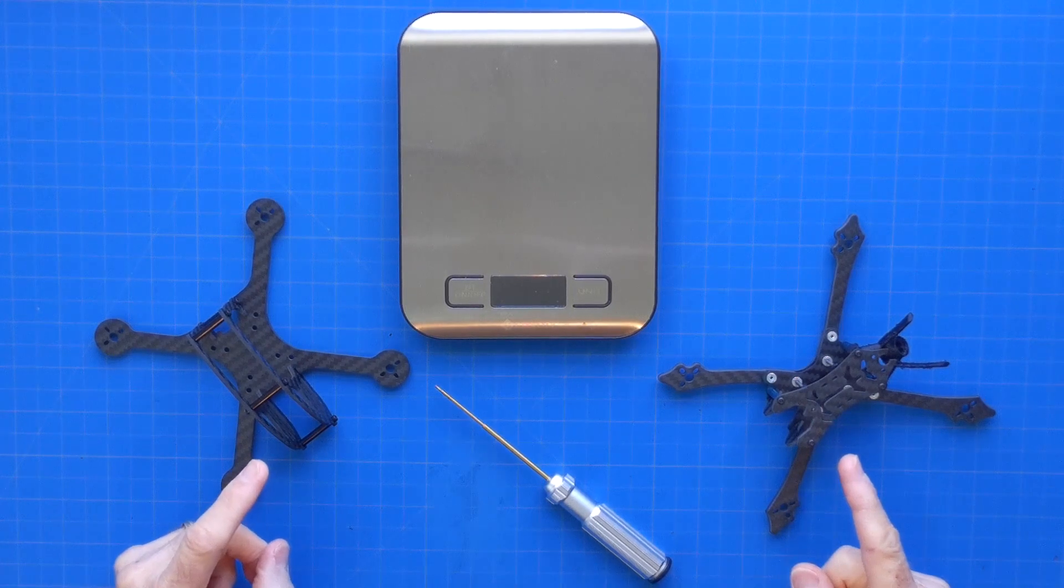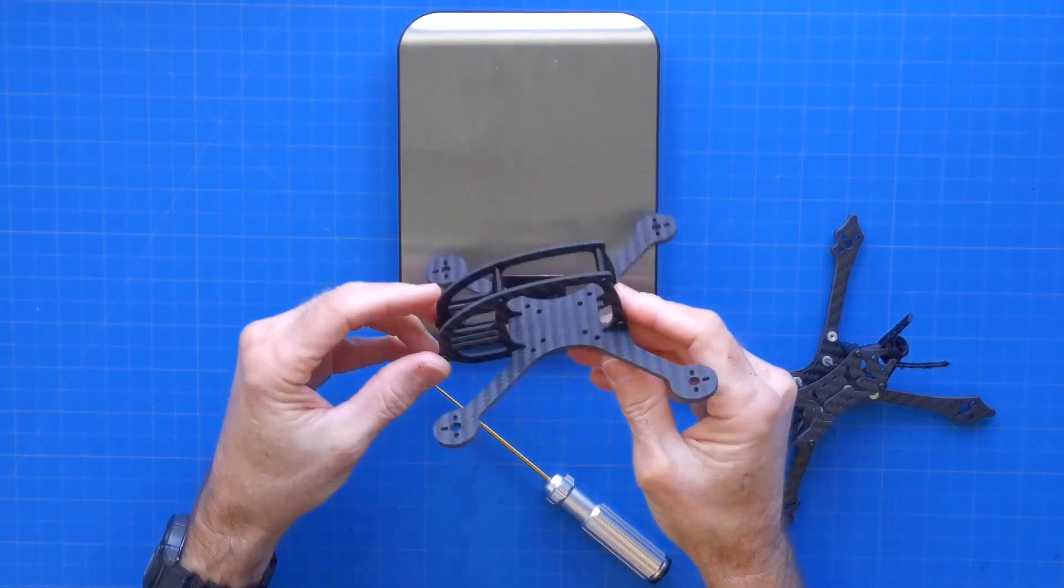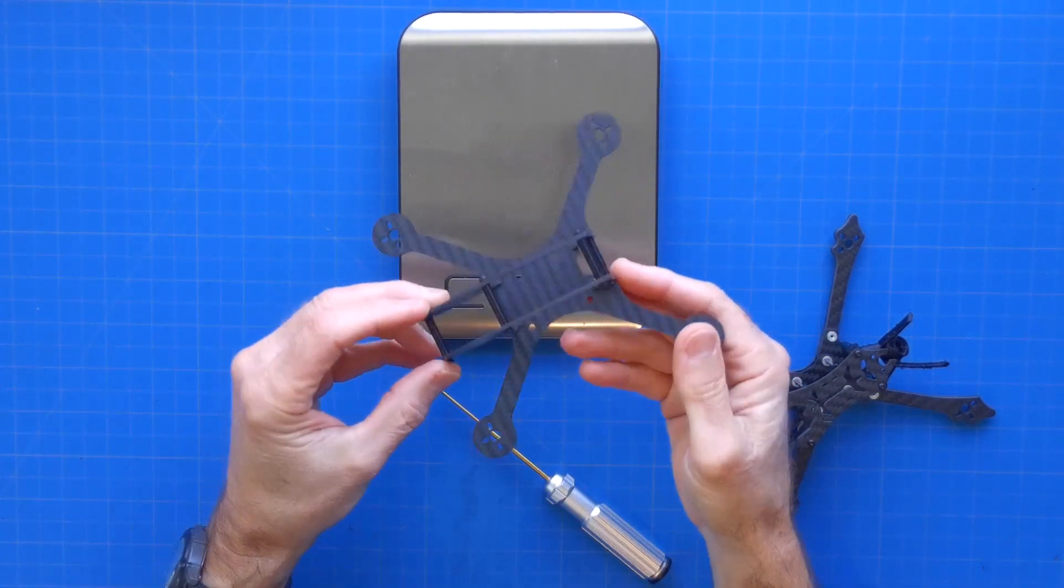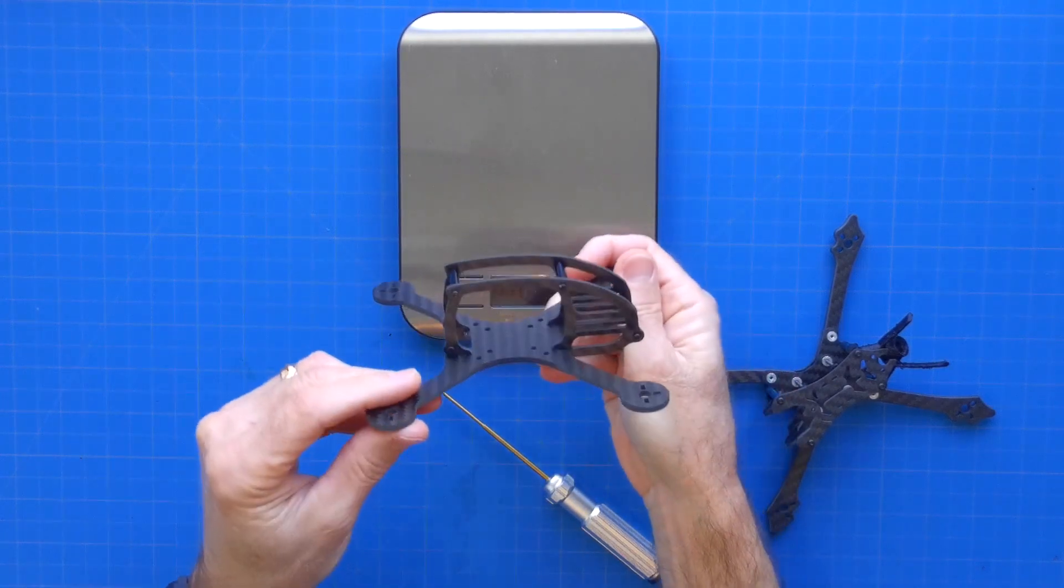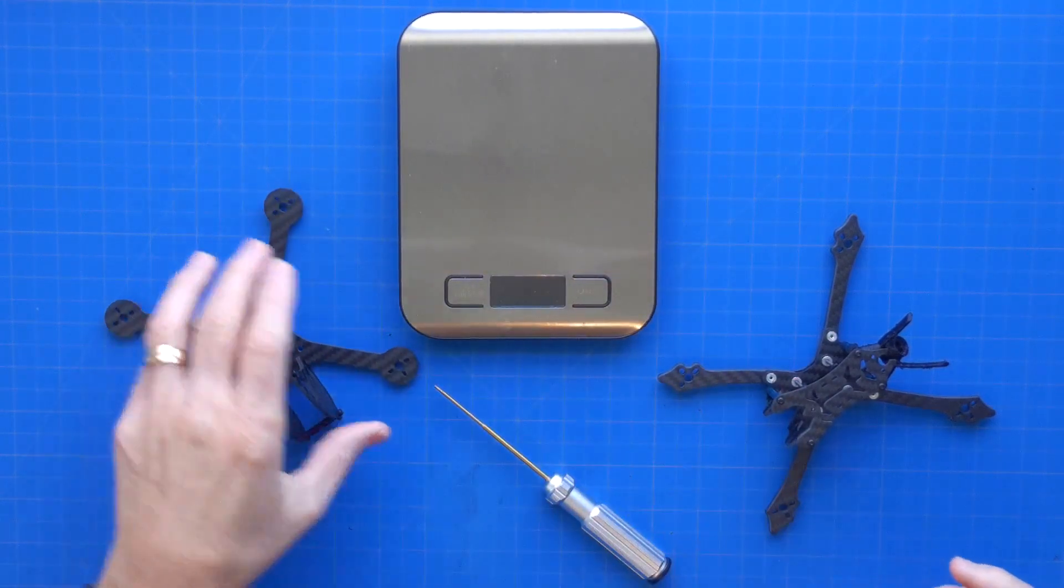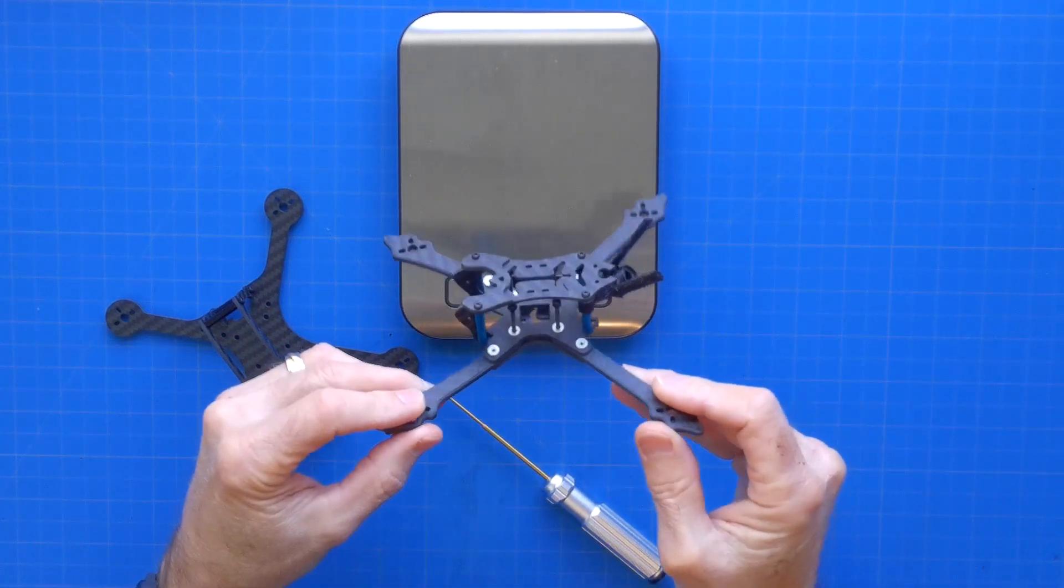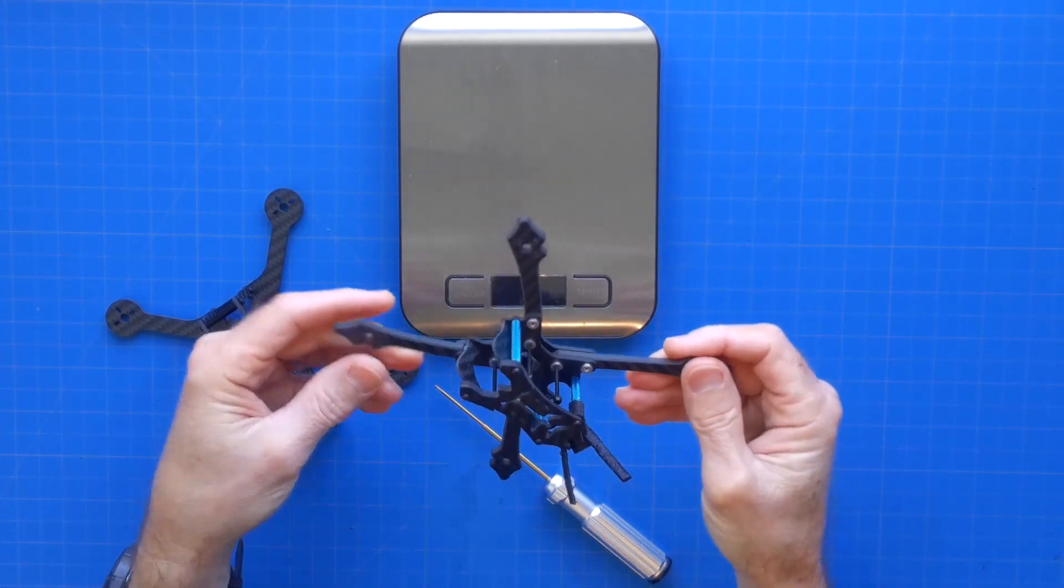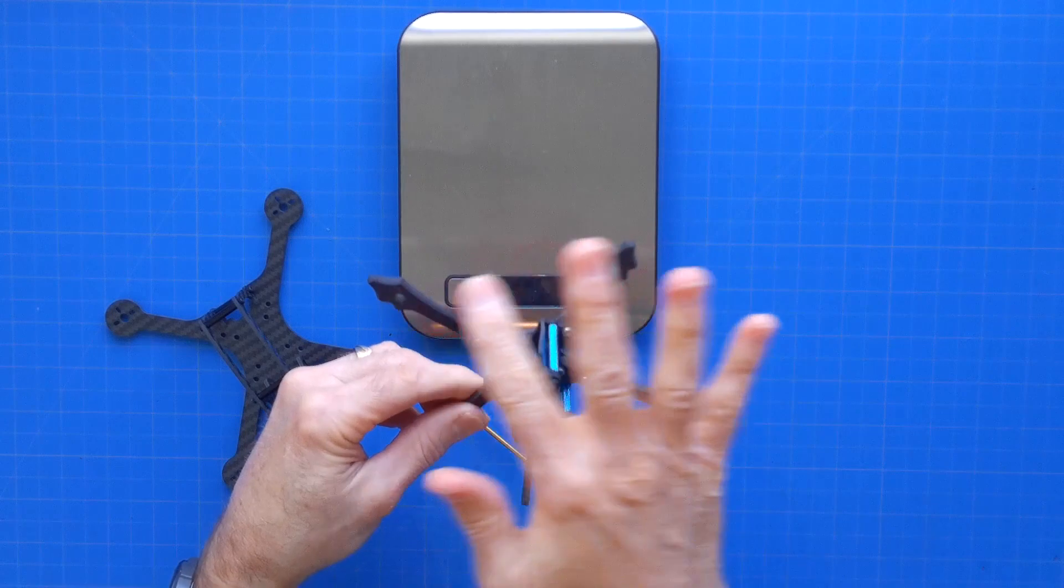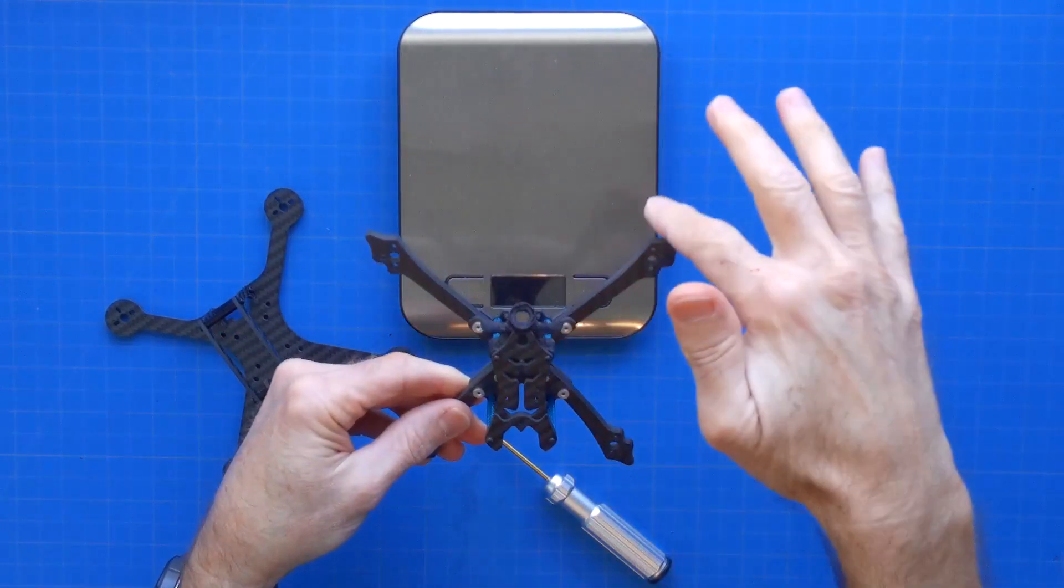These are the two frames we're going to use as examples to walk through the process of comparing parameters of different frames. This one is the FlexRC Ascent HD and this is the HDLRC Arrow 3 Hybrid. What's unique about this frame, which just came out, is the distance between the two front arms is narrower than the distance between the two back arms.